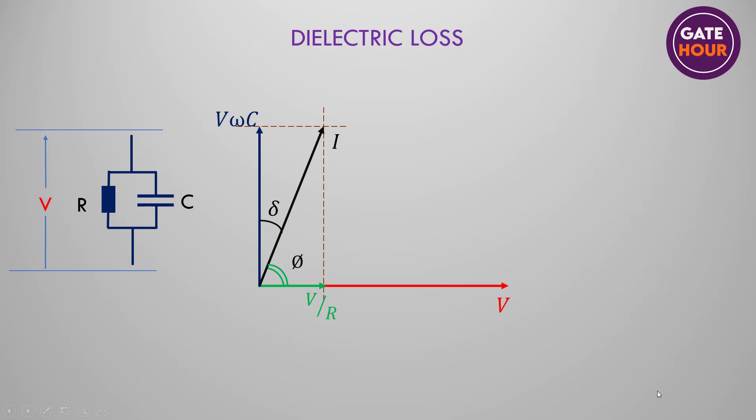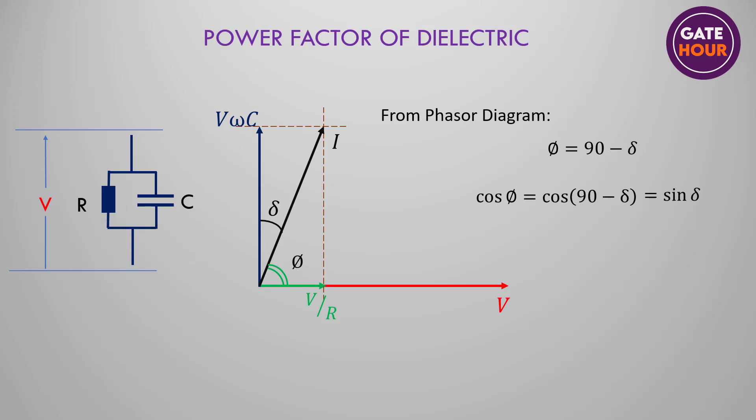This is the background we needed to answer the question about the power factor of the dielectric of an underground cable. Power factor of the dielectric is the cosine of the angle between current and voltage phasors. From the phasor diagram, phi equals 90 minus delta. Therefore, cos phi equals cos of 90 minus delta, which equals sine delta. Therefore, the answer to the question is option C, that is sine delta.